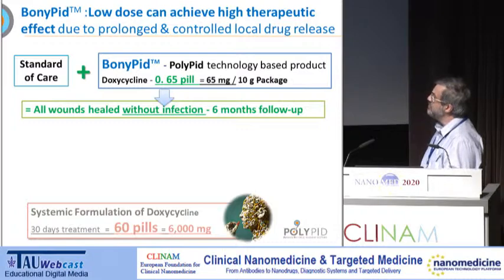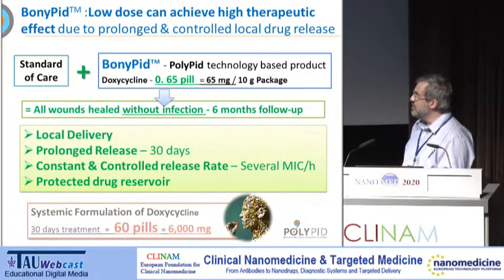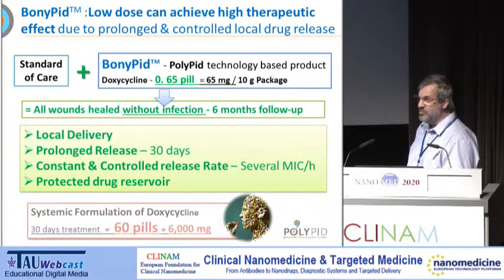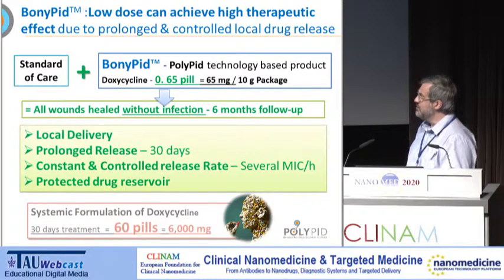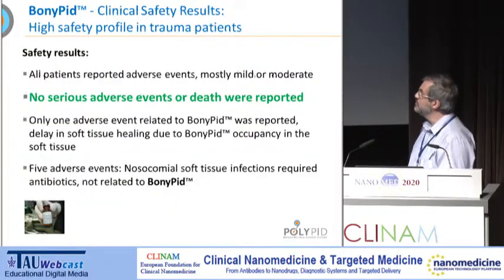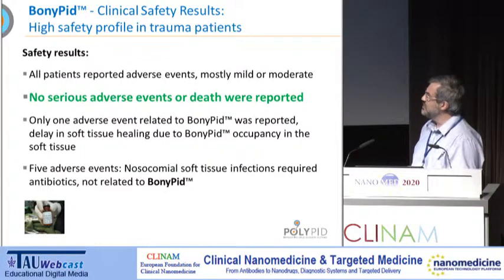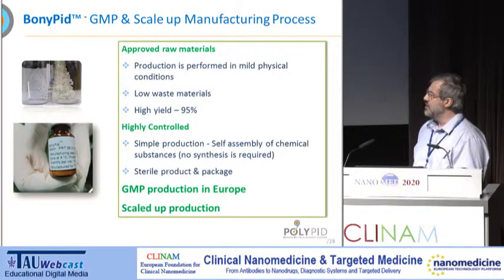The conclusion: standard of care plus Bonipid shows significant anti-infection effect. We believe this is due to local delivery with prolonged release of about 30 days, controlled release rate at several micrograms concentration per hour during these 30 days, and a protected drug reservoir — meaning you can use a very small reservoir and still keep it very active without degradation in vivo. There were no serious adverse events, with a high safety profile. It is now produced under GMP at high scale in Europe.